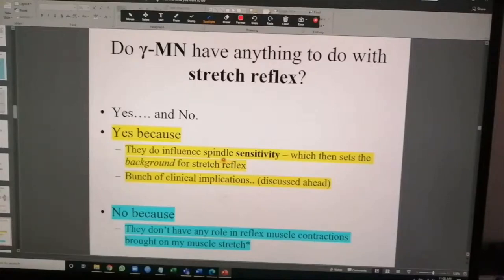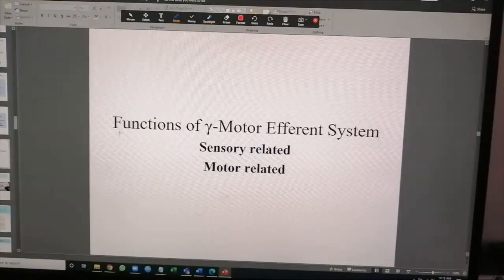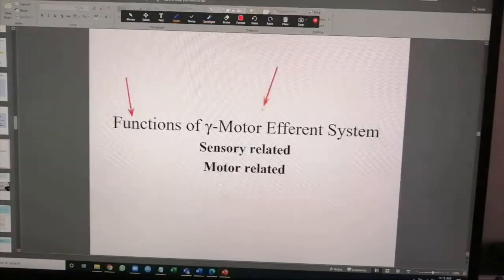Then if the gamma efferent is not very angry and it's just basal level, and now you stretch it, the response will be more mellow. This, you move on to the no, because it doesn't have any role to play in the reflex muscle contractions brought on by the muscle stretch.